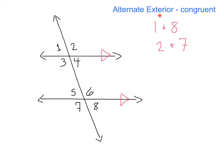Next, alternate exterior angles. These angles are also congruent. Alternate means opposite sides, and exterior is going to be the outside of the parallel lines. So for our alternate exterior angles, we've got 1 and 8, as well as 2 and 7. These angles are congruent.